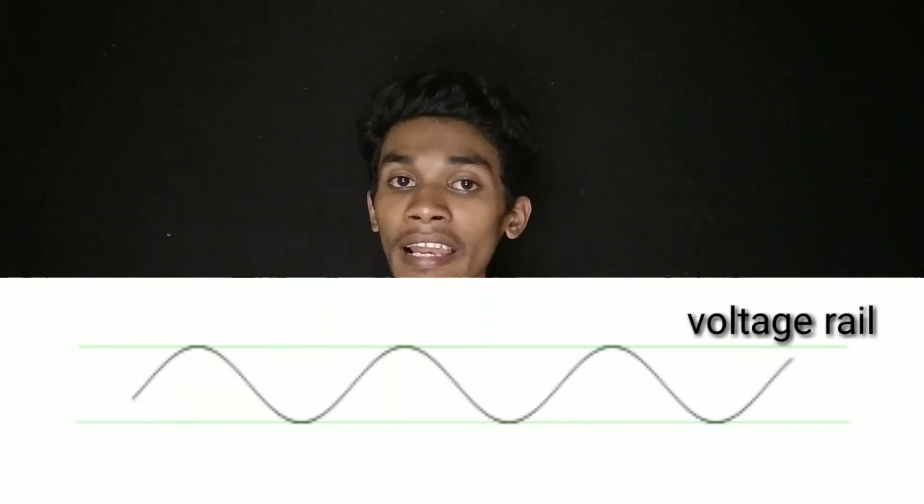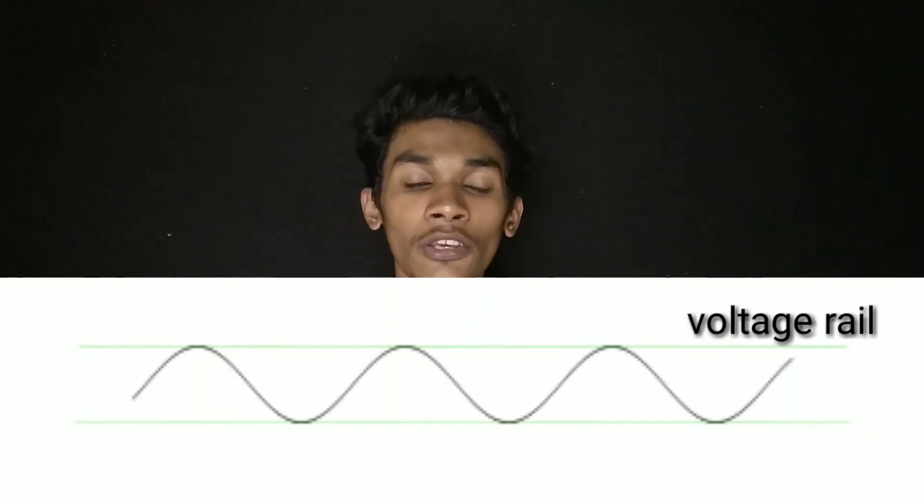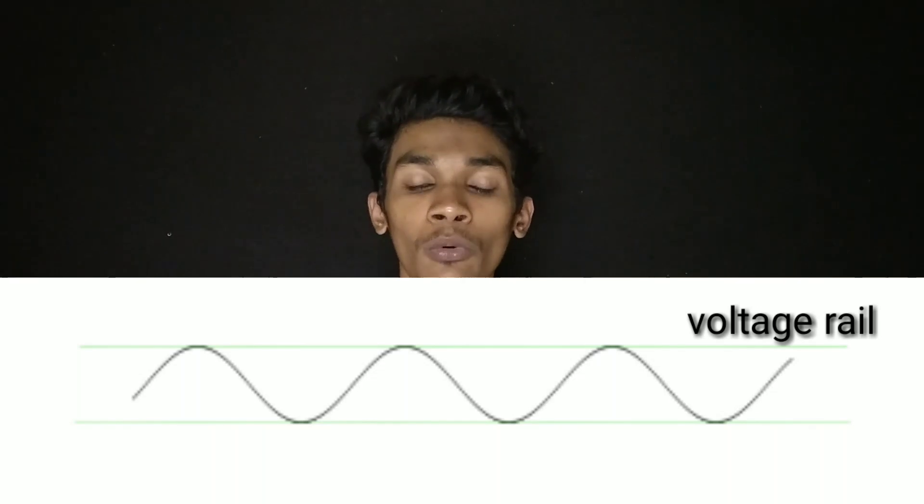The amplifier has a range — this is a top end and low end of the amplifier range. This is a voltage rail, which is a line. This voltage rail covers all the amplitudes. The sound is traveling in the wave.